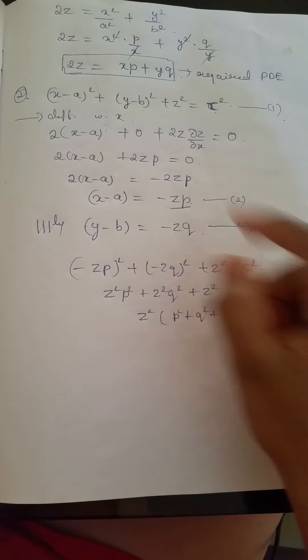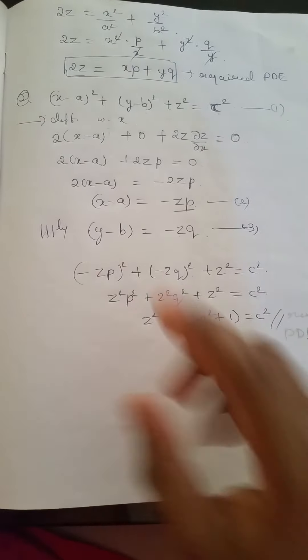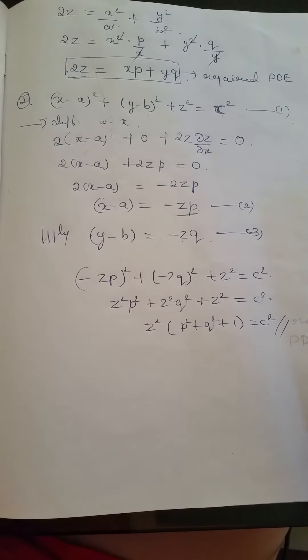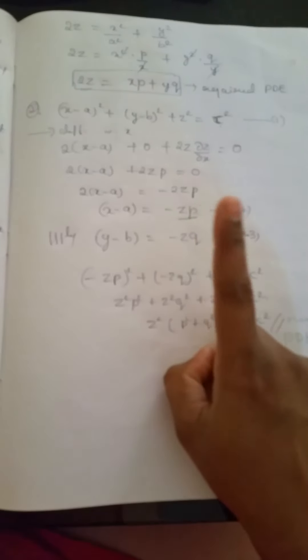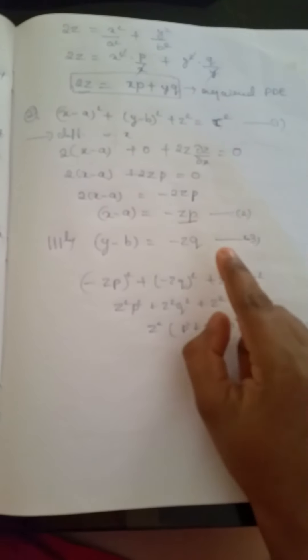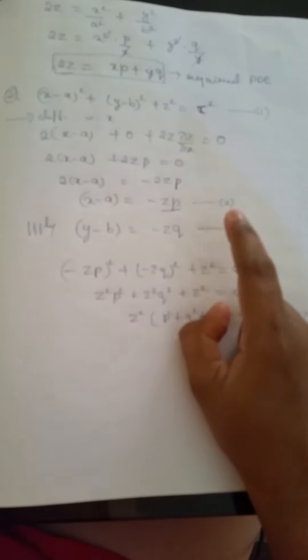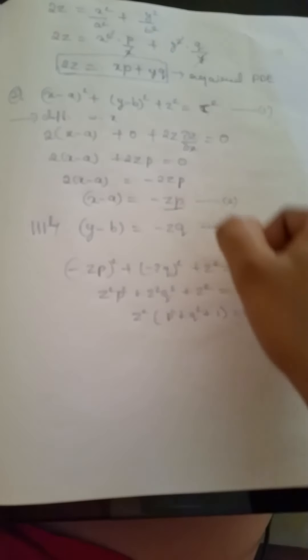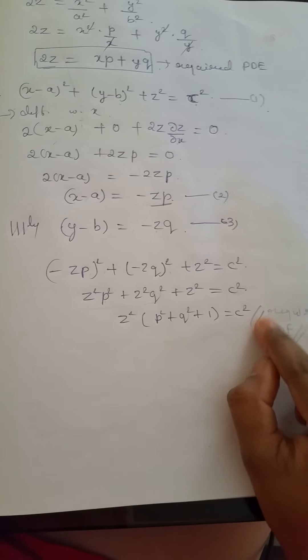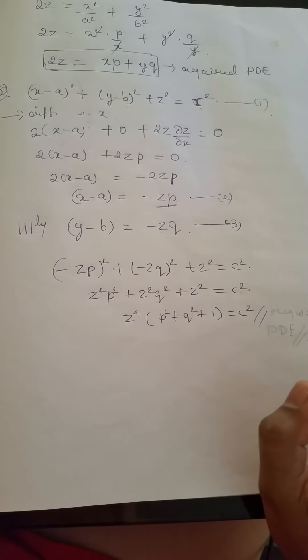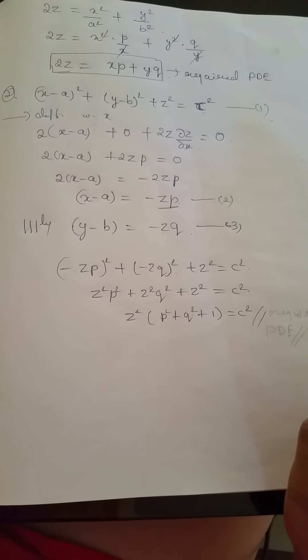You can solve the second problem in the same way. First, differentiate with respect to x and then with respect to y to get the second and third equations. Then substitute those two equations into the first equation to obtain the partial differential equation.